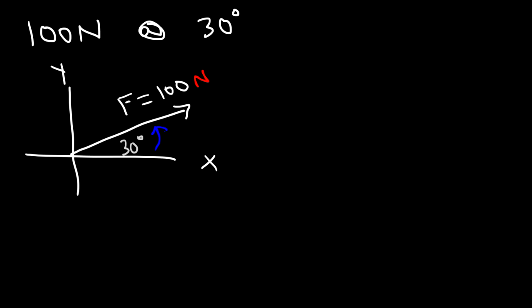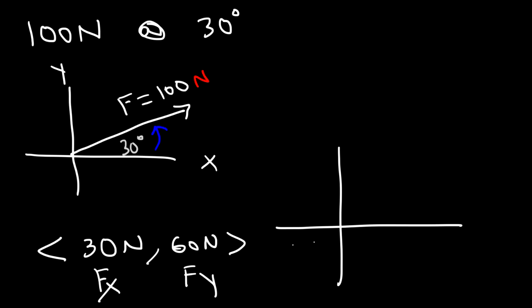So we have a force of 100 newtons at an angle of 30 degrees relative to the x-axis. So you can also describe the magnitude and direction graphically. Another way in which you could describe a force is by expressing its components. So you could say its x component is 30 newtons and its y component is 60 newtons. So let's call this fx and fy. And the graph looks like this.